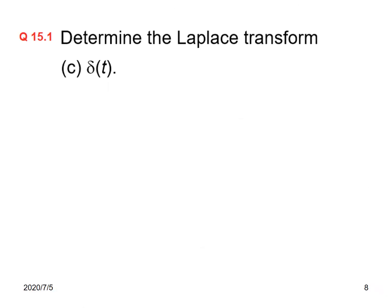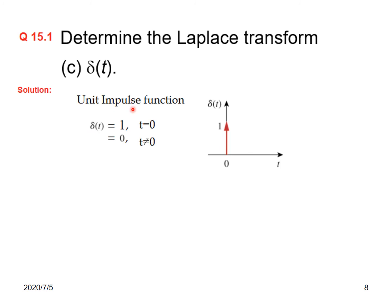Now let us look at the third example: finding the Laplace of the impulse function delta t. The impulse function is defined as having value 1 only at t equals 0, and 0 at all other places. With this definition, the Laplace of delta t is the integral of delta t times e to the minus st dt. Since the function has a value only at t equals 0, we plug in t equals 0 to get e to the power minus 0, which equals 1. So the Laplace transform of delta t is 1.